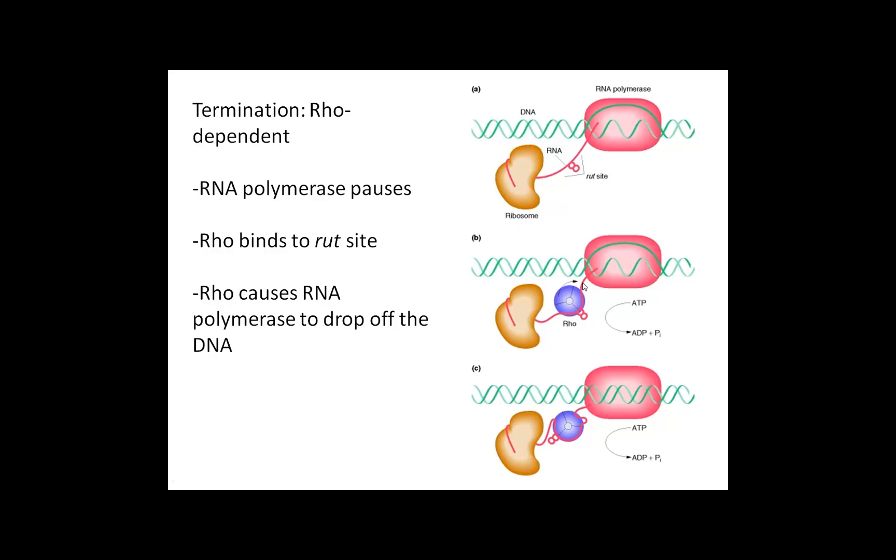Then Rho somehow binds the RNA in a certain way that causes it to be destabilized, and it kind of pulls that RNA out of that transcription bubble and everything falls apart.